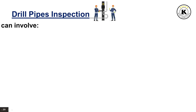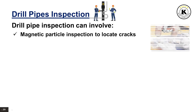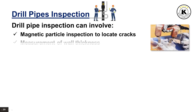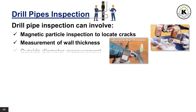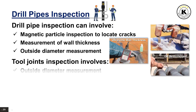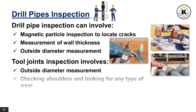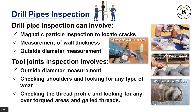Drill pipe inspection can involve magnetic particle inspection to locate cracks, measurement of wall thickness, and outside diameter measurement. Tool joint inspection involves outside diameter measurement, checking shoulders and looking for any type of wear, and checking the thread profile for over-torqued areas and galled threads.